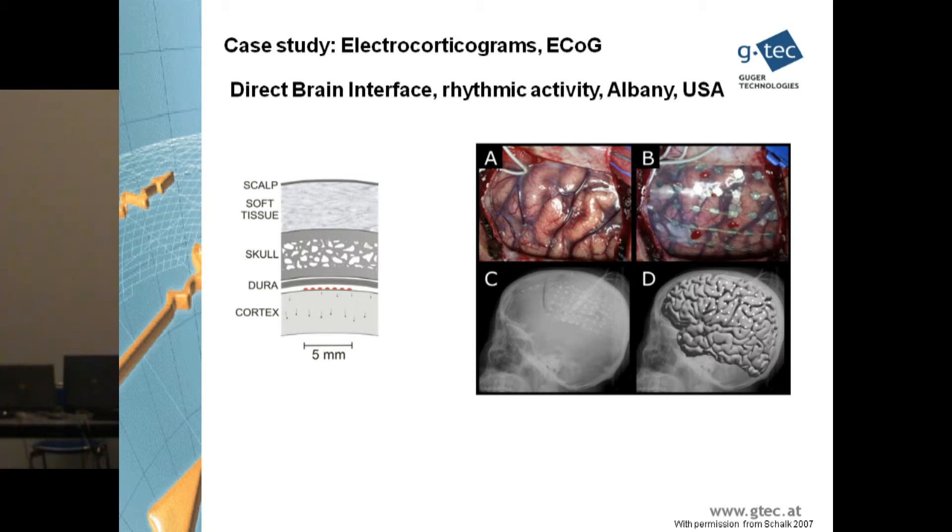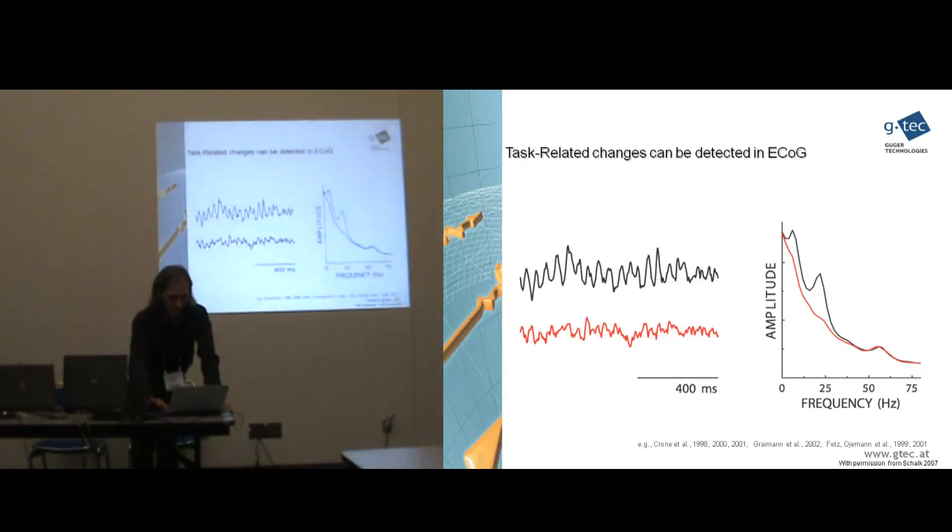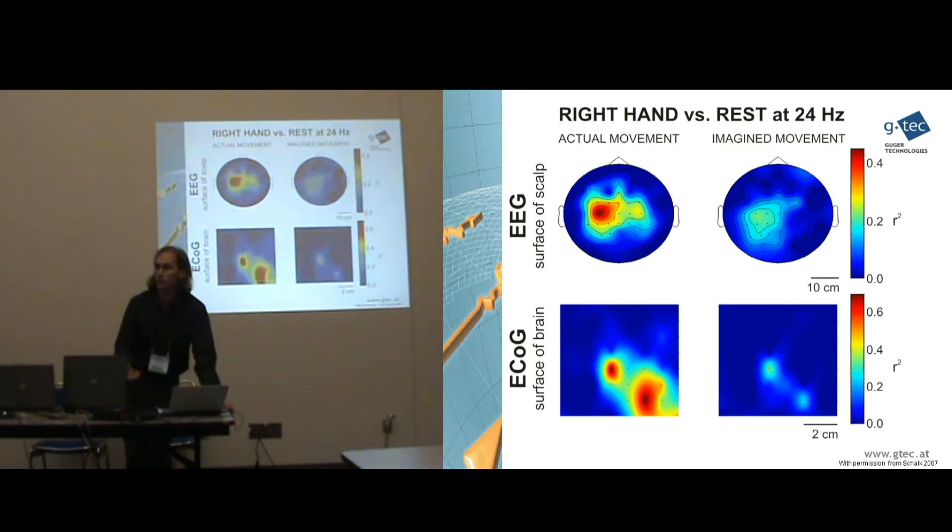Here this trace is a normal ECoG recording that we have for about 1 second. It shows some alpha activity. And if we calculate the power spectrum density of it, we see here the power spectrum. And we find a peak around 10 Hz indicating the alpha activity. And if you perform for example a motor movement imagination, this alpha activity is decreasing. And you see also this decrease in the red line of the power spectrum. So basically you find the same changes like in the EEG data also in the ECoG data. And you can use it for a brain computer interface.